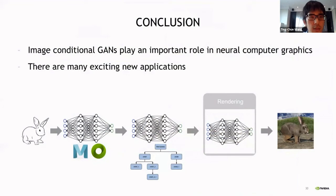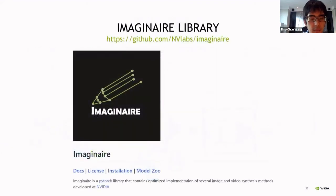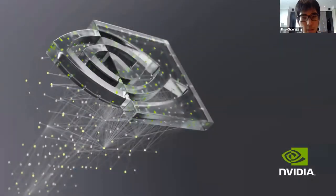To conclude, image-conditional GANs can play an important role in neural computer graphics, and there are many exciting new applications that we can explore. This SPADE module, the code of it has been released in our Imaginaire library. In addition to this SPADE network, we also released a bunch of different image synthesis and video synthesis works in this library as well. So if you're interested, you can go ahead and try yourself. That's it. Thank you very much for your attention.